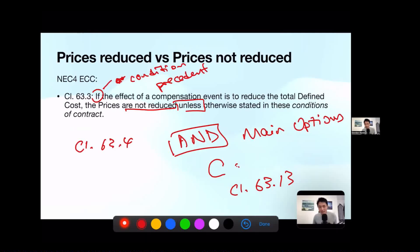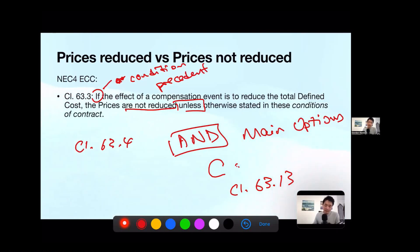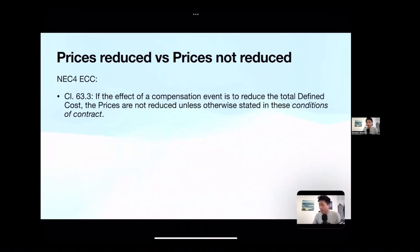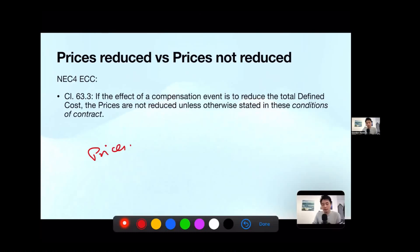Some of you may still be confused. The main confusion is often the difference between Option A and Option C. In Option A, the contractor is paid by the activity schedule — different activities, different prices, you add them all up to get the prices, and the contractor is paid accordingly.